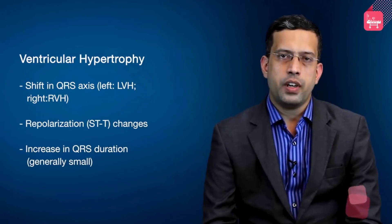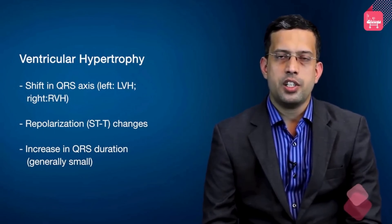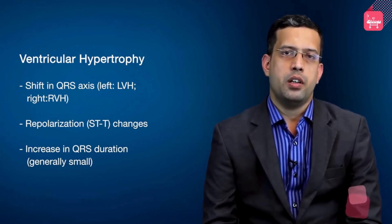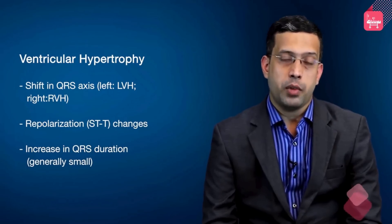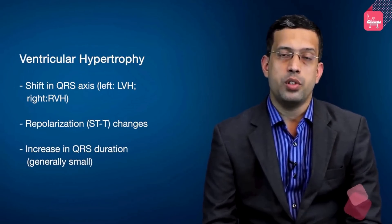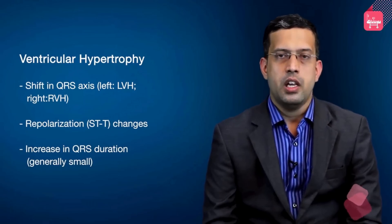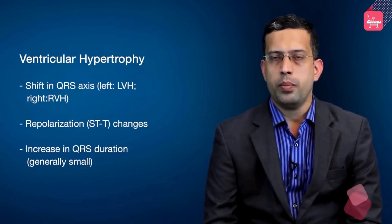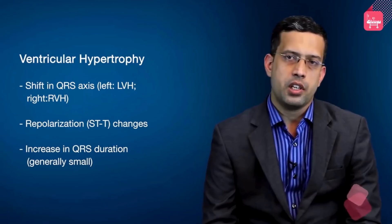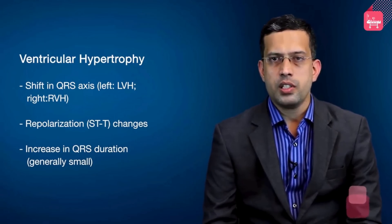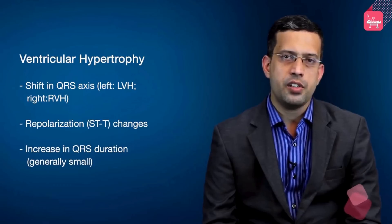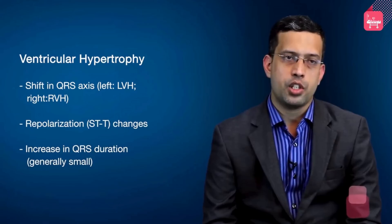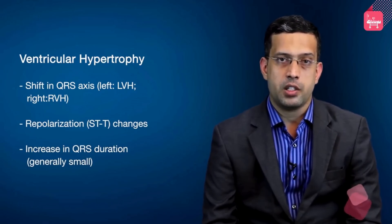Almost always, depolarization abnormalities are accompanied by repolarization abnormalities. As seen previously in myocardial infarction, ventricular hypertrophy often causes STT changes, which are repolarization changes, in addition to increasing the QRS complex. It can also cause an increase in QRS duration, though this increase is generally of small magnitude and doesn't reach the level caused by conduction abnormalities such as bundle branch blocks.